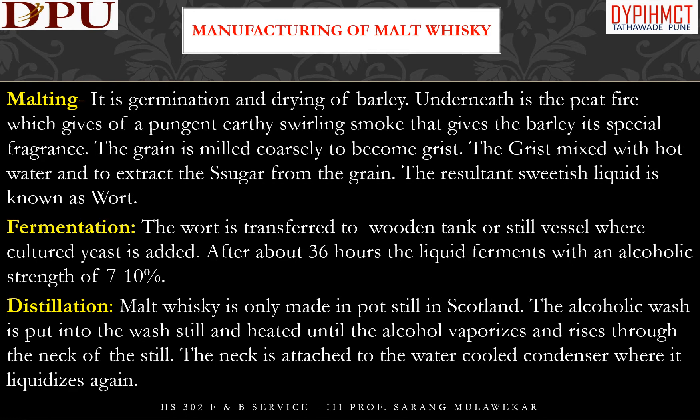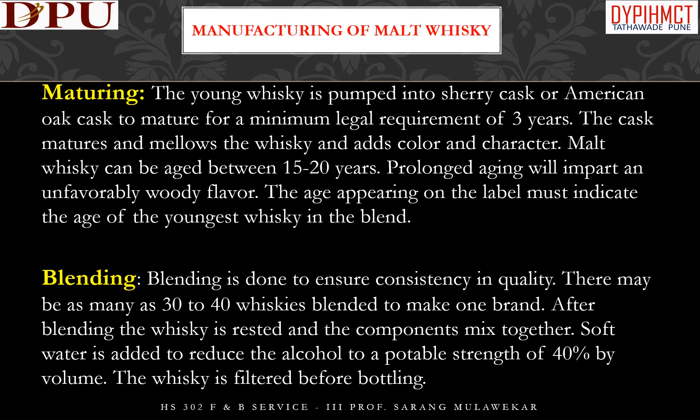Malt whiskey is only made in pot stills in Scotland. The alcoholic wash is put into the wash still and heated until the alcohol vaporizes and rises through the neck of the still. The neck is attached to a water-cooled condenser where it liquidizes again. The next step is maturing — the young whiskey is pumped into sherry casks or American oak casks to mature for a minimum legal requirement of 3 years. The cask matures and mellows the whiskey and adds color and character.